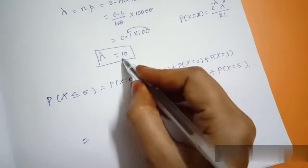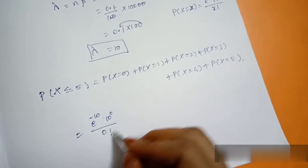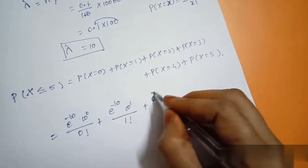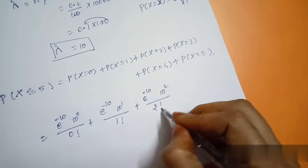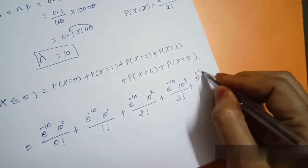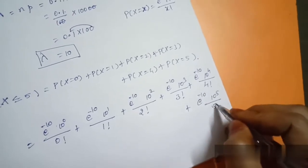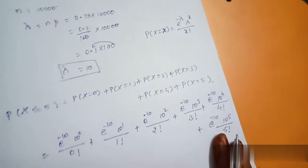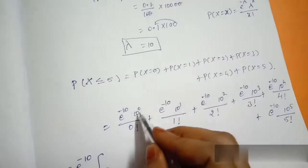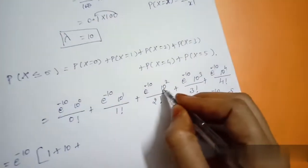Here, lambda equals n times p equals 10,000 times 0.001 equals 10. Substituting x = 0: e^(-10) times 10^0 divided by 0 factorial, plus x=1: e^(-10) times 10^1 divided by 1 factorial, plus e^(-10) times 10^2 divided by 2 factorial, plus e^(-10) times 10^3 divided by 3 factorial. Taking e^(-10) as common factor, we compute: 10^0=1, 0 factorial=1; 10^1=10, divided by 1; 10^2=100, divided by 2 factorial.